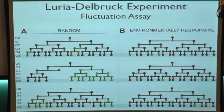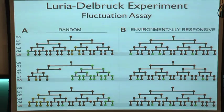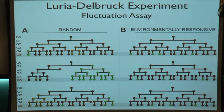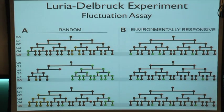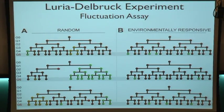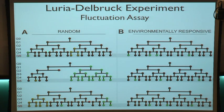What Luria and Delbrück recognized was that if the mutations arise spontaneously in this tree, as the cells grow and divide, they can generate mutations at every branch. Every cell can potentially have a random spontaneous mutation. I've colored them with different colors to indicate whether it's positive, neutral, or negative. If instead they occur in response to some sort of environmental stimulus, then in the most ideal situation, you would get no mutations until the final generation when you actually expose them to this environmental stimulus.